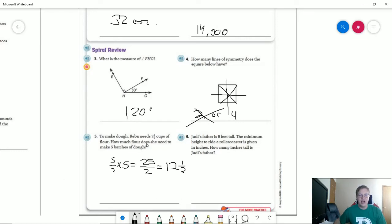Number 5, Reba needs 2 and a half cups of flour. For one batch, we multiply that by 5. So to do that, we change this from a mixed number to an improper fraction. So 5 halves times 5 gives us 25 halves. When we divide by 2 to reduce that, we would get 12 and a half.